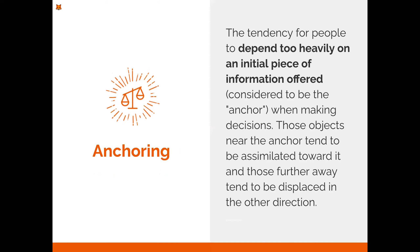The first one is anchoring bias — the tendency for people to depend too heavily on an initial piece of information. In a restaurant, if you see one item is super expensive — like a pricey salad — and compare it to a pizza that's a little less expensive, you might conclude the pizza is best value. That expensive salad creates an anchoring bias; you're comparing prices based on the cheapest and most expensive items on the menu.